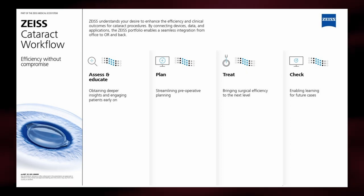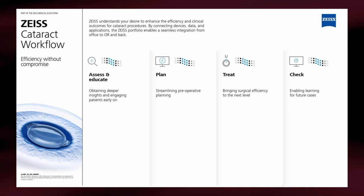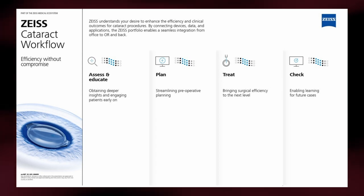The first step, assess and educate, is the medical examination of the patient. Precise measurement and visualization support clinical decisions, while educational tools help set patient expectations from the very beginning. In the plan step, Zeiss offers a convenient solution for pre-op planning and ordering. The third step is treat — intuitive equipment and applications help to deliver reliable patient outcomes, even when the routine turns into a challenge. The last step, check, enables continuous improvement of performance by collecting and analyzing data.